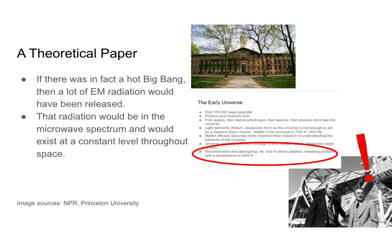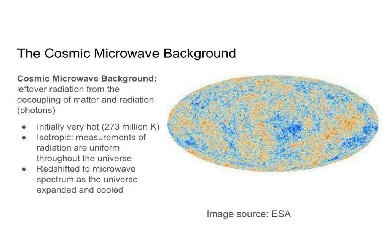In other words, there should be some sort of background microwave radiation that is relatively uniform throughout the entire universe. And in fact, there is — and that is what Penzias and Wilson had discovered. Completely, unexpectedly and unintentionally, they had discovered the cosmic microwave background. The cosmic microwave background is leftover radiation from the decoupling of matter and radiation — that is, the decoupling of protons, electrons, and photons. Initially this was extremely hot, and it was isotropic because we had this decoupling happening throughout the universe.